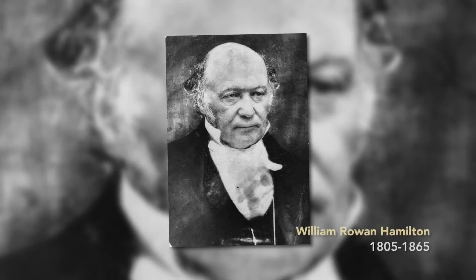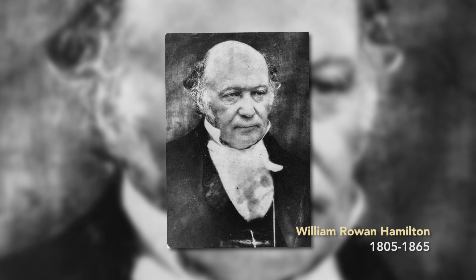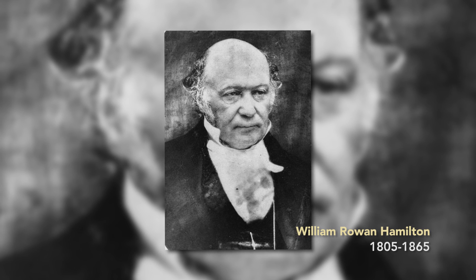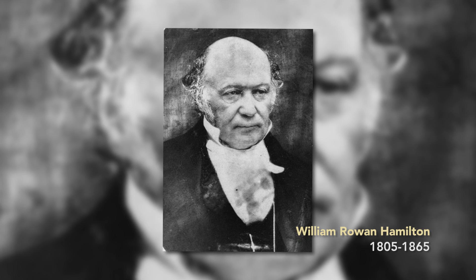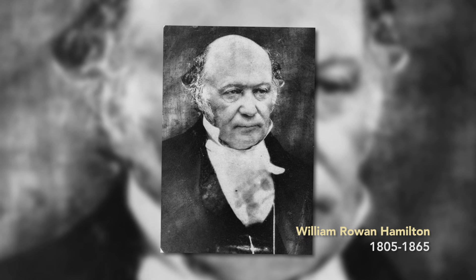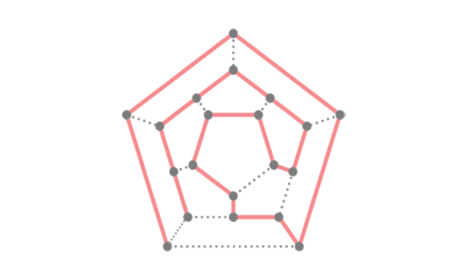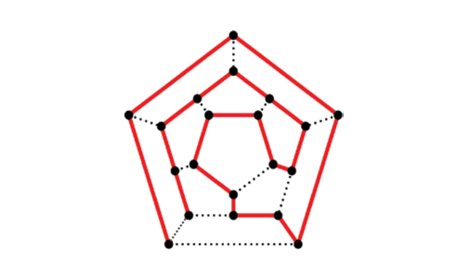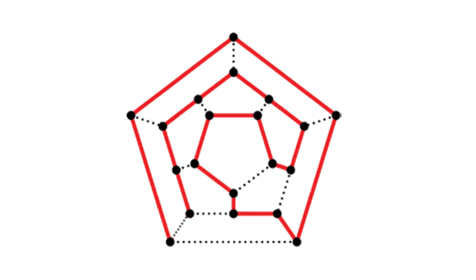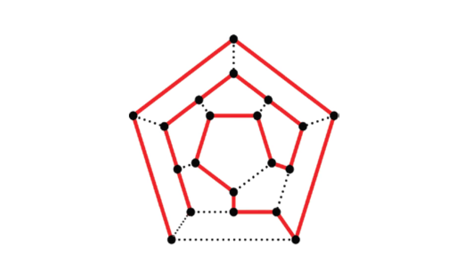One of the first scientists to make inroads on this field was Sir William Rowan Hamilton, who in the 19th century came up with what is now called a Hamiltonian path.